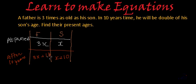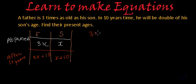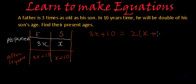So what is the relation between their ages after 10 years? The father will be double of his son's age. So father's age, which is 3x plus 10, will be 2 times his son's age, which is x plus 10.